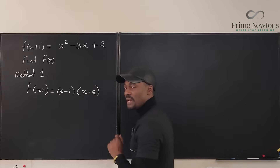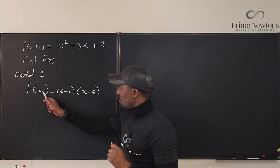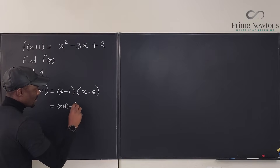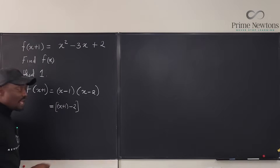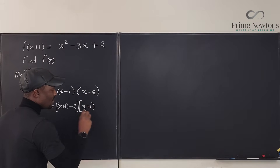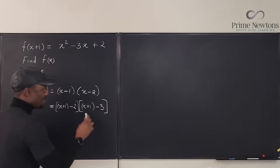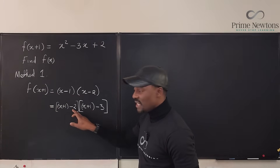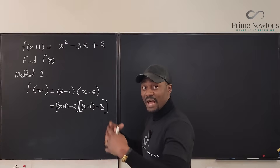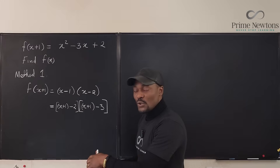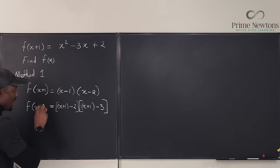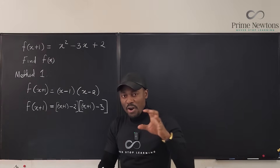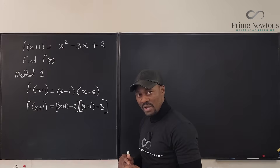Whatever I give to this machine, I cannot yet see X plus one in the factored form, but I can create it. What would I do to X plus one to make it X minus one? I subtract two from it, so this can be written as X plus one minus two — that's X minus one — multiplied by X plus one. And what would I do to X plus one to make it X minus two? I subtract three from it.